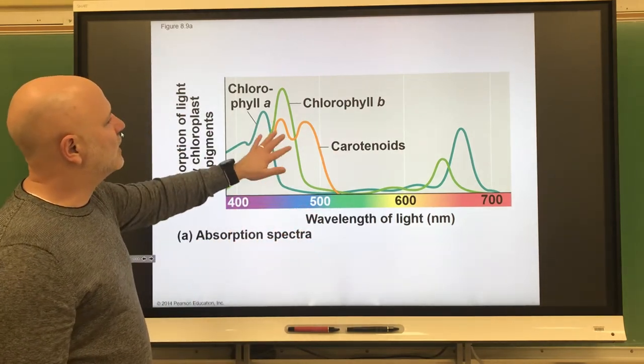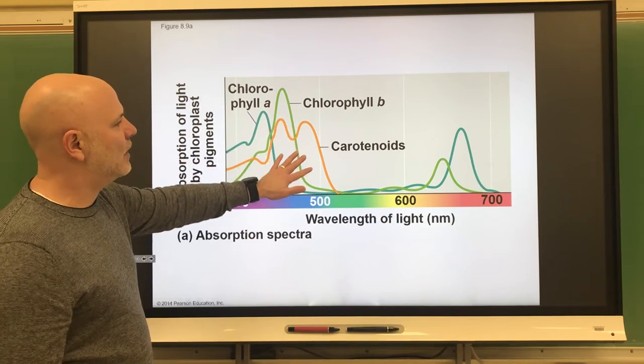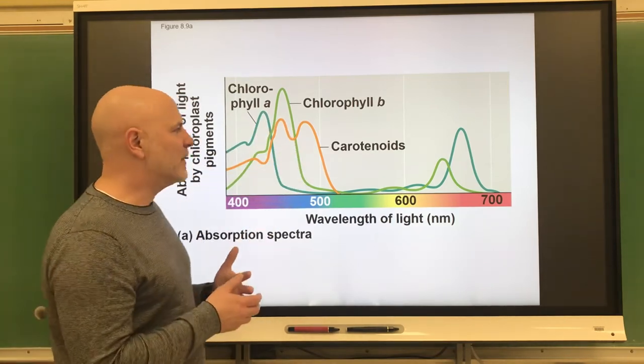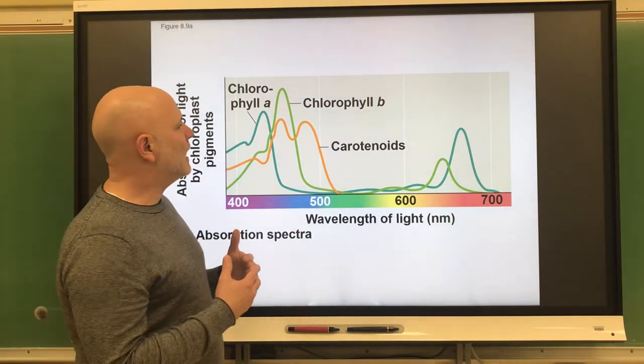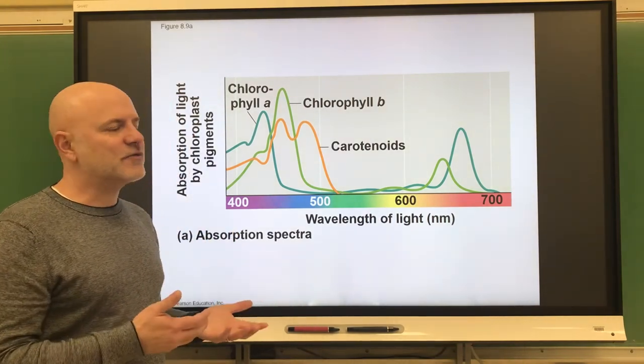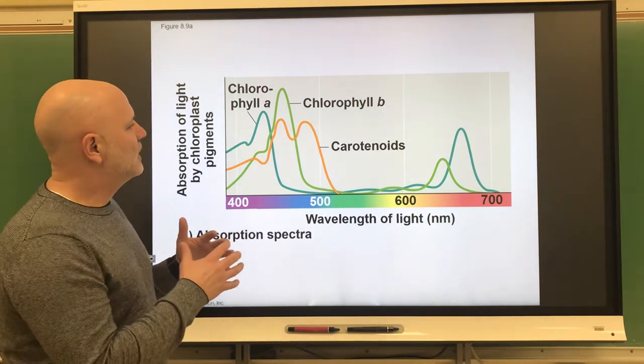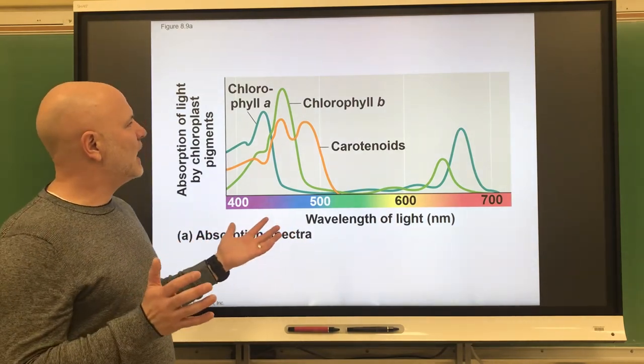These other ones that you see on here, chlorophyll B, carotenoids, and there's another one called xanthophylls, these are going to absorb other colors of the spectrum. And so these are called accessory pigments, and so they just broaden the range of which light can be absorbed.